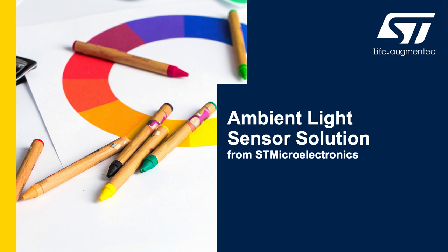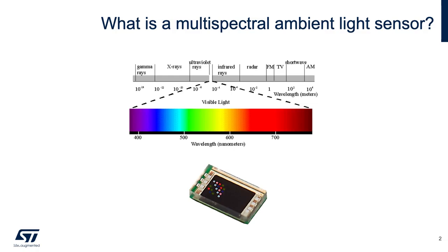My name is Armita Abadian and today I'm going to introduce you to the Ambient Light Sensor solution from STMicroelectronics. An ambient light sensor is a type of photodetector capable of converting light into a voltage or current. The multispectral ambient light sensor is used to measure the magnitude of a specific wavelength or specific bands of wavelength on the light spectrum. The goal of these sensors is to improve the visual experience and make the lighting experience comfortable for the end user.